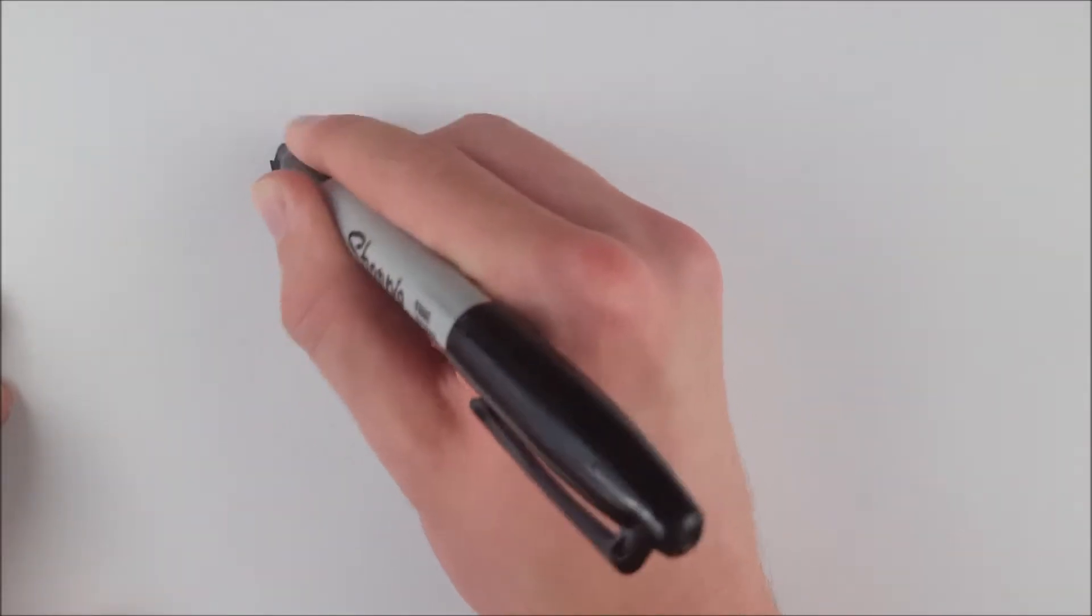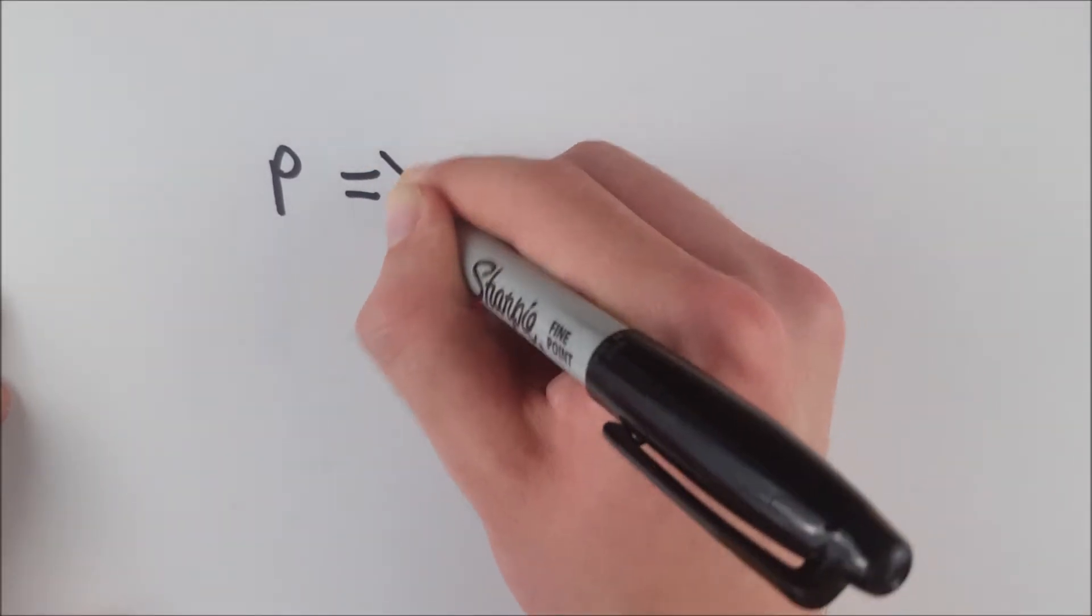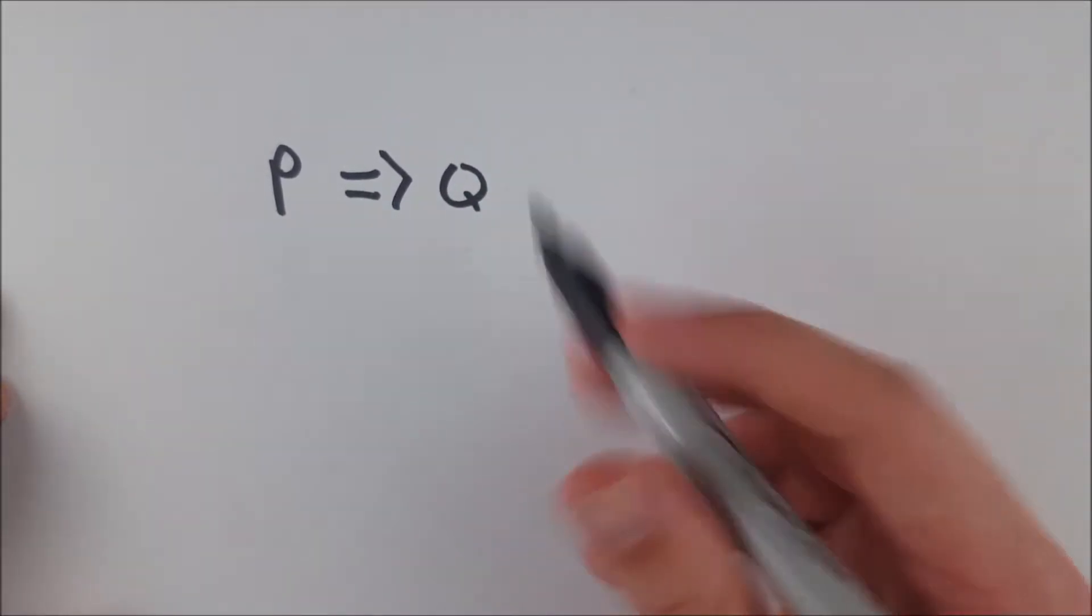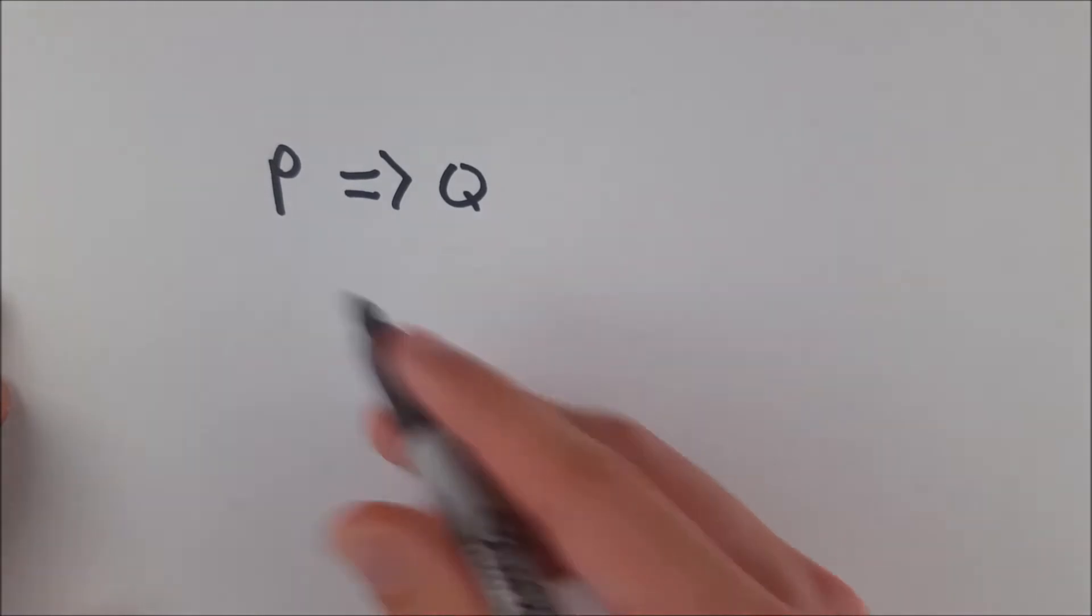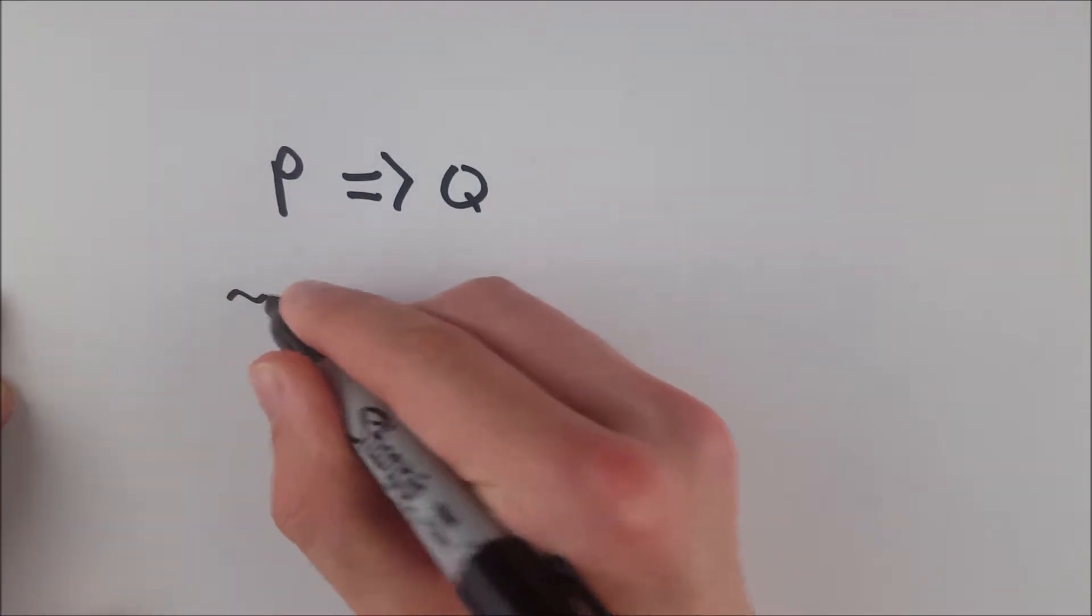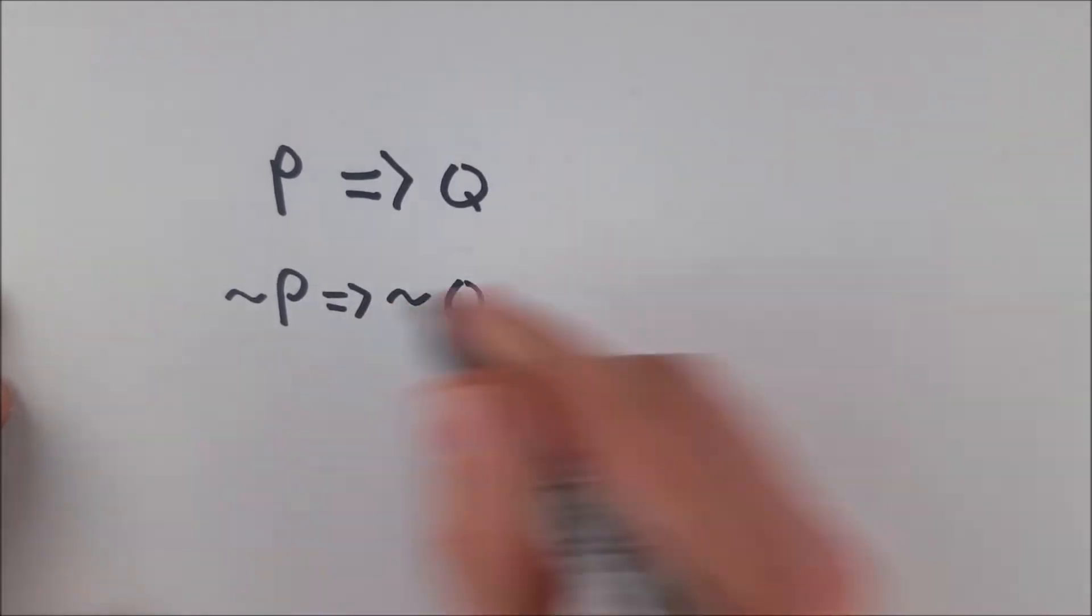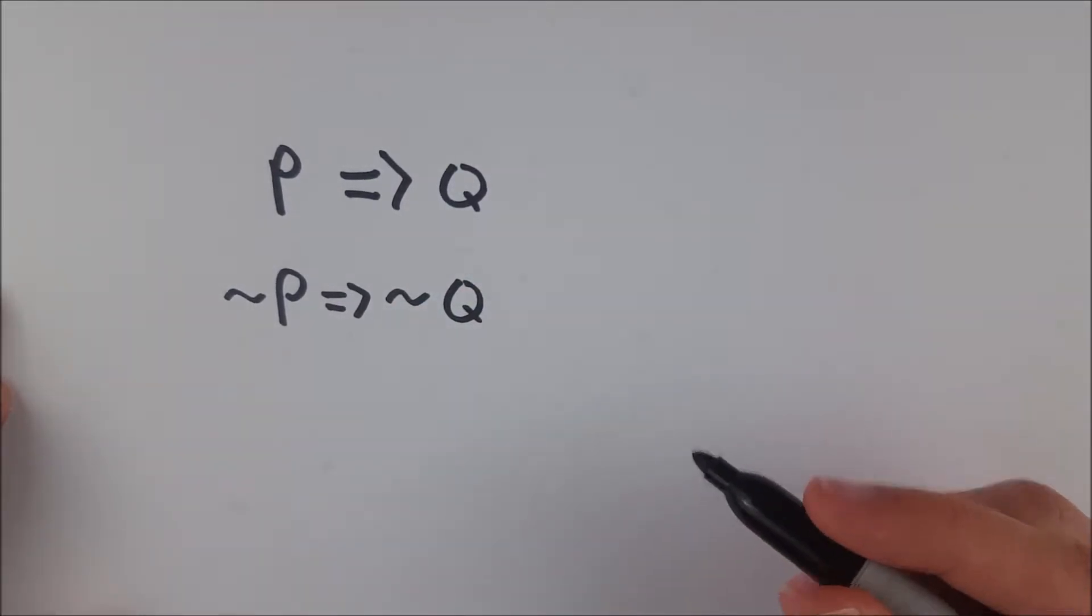So if we have a conditional statement P implies Q, the inverse of this statement is basically negating both sides. So that is not P implies not Q. You take the negative of both sides.